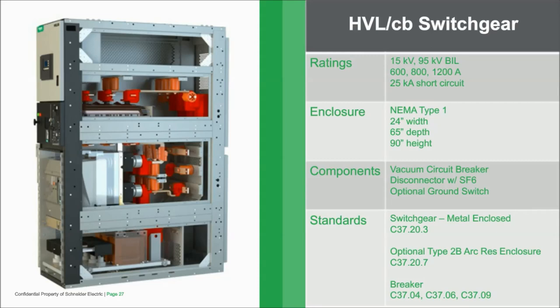Is there a set number of times the disconnect can be operated before it needs repair or replacement? The life of the disconnect is dependent on the actual amperage sent to it. As the conductors rotate and the copper ends take some abuse from operation, the damage depends entirely on the amperage of that break. We have graphs and charts demonstrating that the more operations and the higher the amperage, the shorter the life. At 600 amps, we see something closer to a thousand operations.